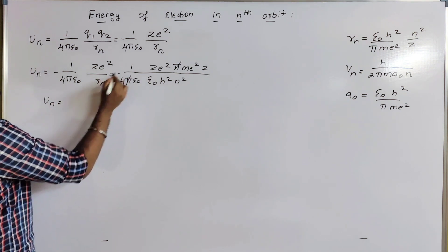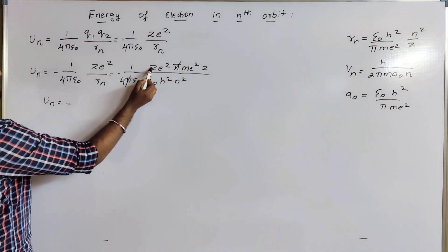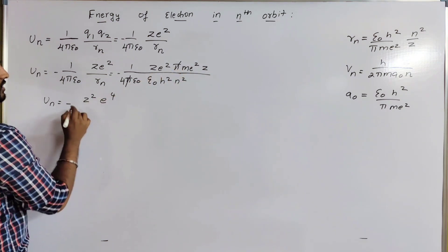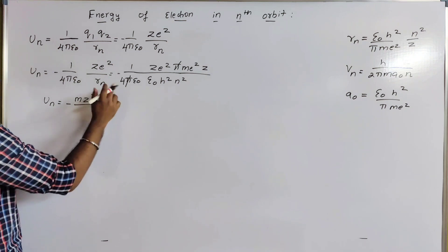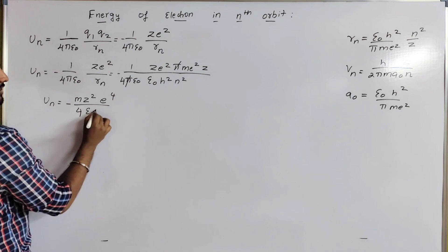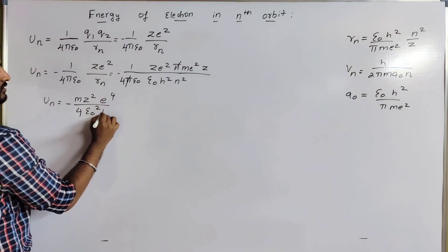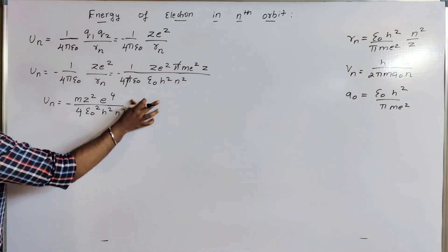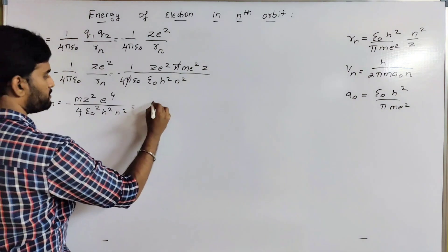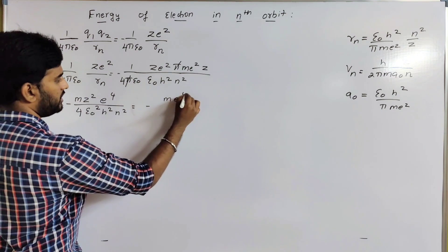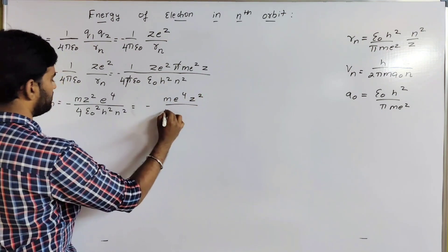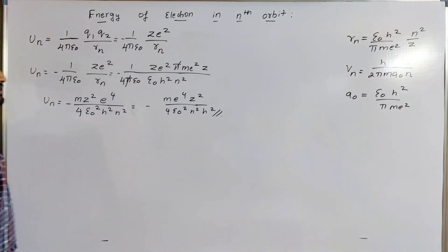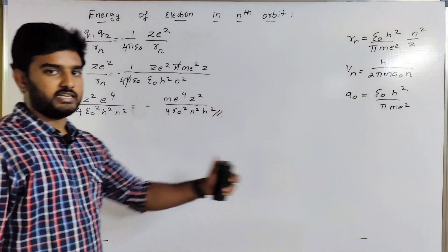After substitution and cancellation, the potential energy Un equals minus Z squared m e to the power 4 divided by 4 ε₀ squared n squared h squared. This is the potential energy of the electron in the nth orbit.